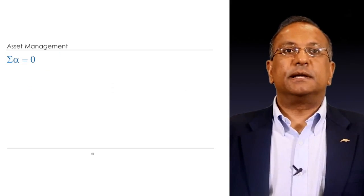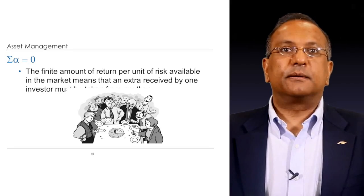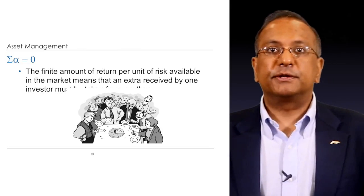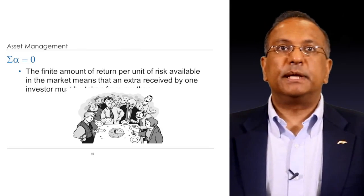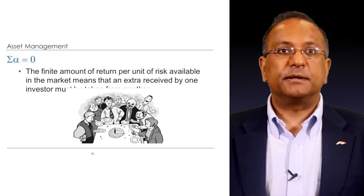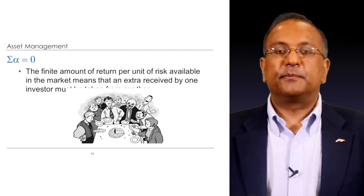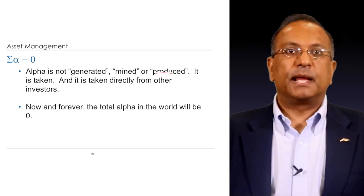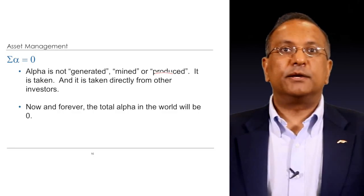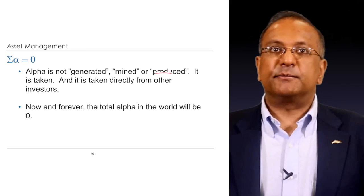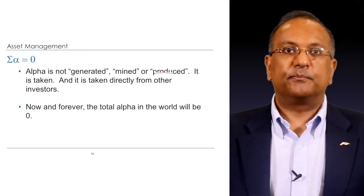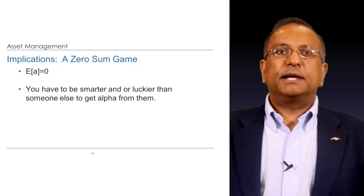The sum of alpha is equal to zero. In aggregate, the sum of alpha must equal zero. The finite amount of return per unit of risk available in the market means that extra return received by one investor must be taken from another — this is an extraordinarily important point. Alpha must sum to zero. Alpha is not generated, mined, or produced; it is taken from somebody, and it is taken directly from other investors. Now and forever, the total alpha in the world will be zero.